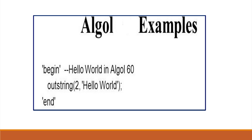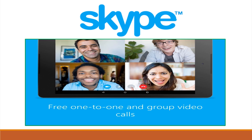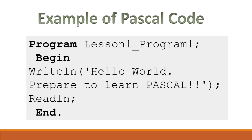In Algol, 'outstring' is used to print. Pascal, also known as Pattern Analysis Statistical Modeling and Computational Learning, is another procedural language. Features of Pascal include: it has many constructs of Algol, it is a strongly typed language, and it also supports object-oriented programming. Skype is an implementation of Pascal. In Pascal code, begin and end are the same as in Algol's code. The difference is there is no punctuation after 'begin', and programs start with the 'program' keyword. 'Writeln' and 'write' are used to display and remove messages from the screen respectively.